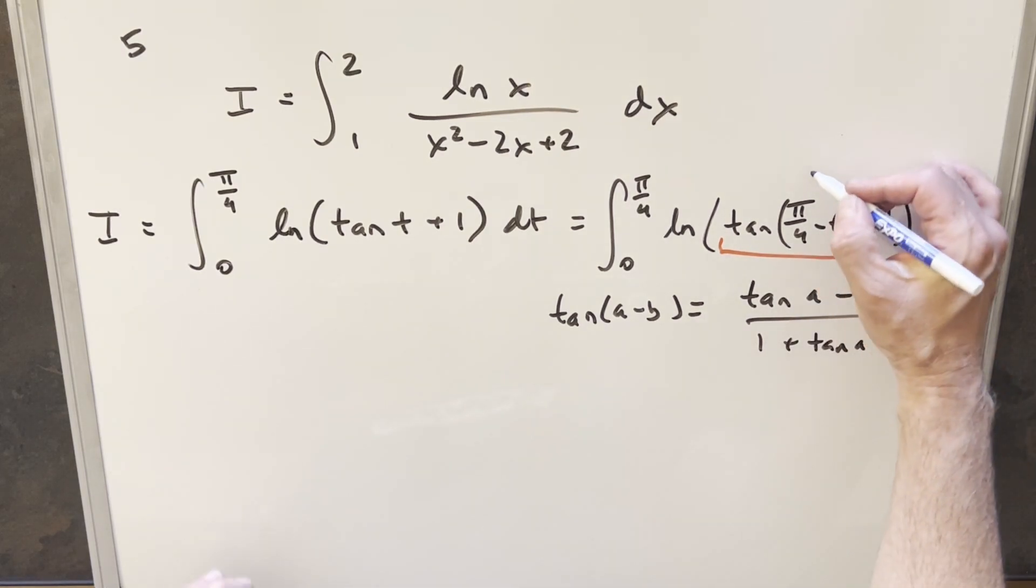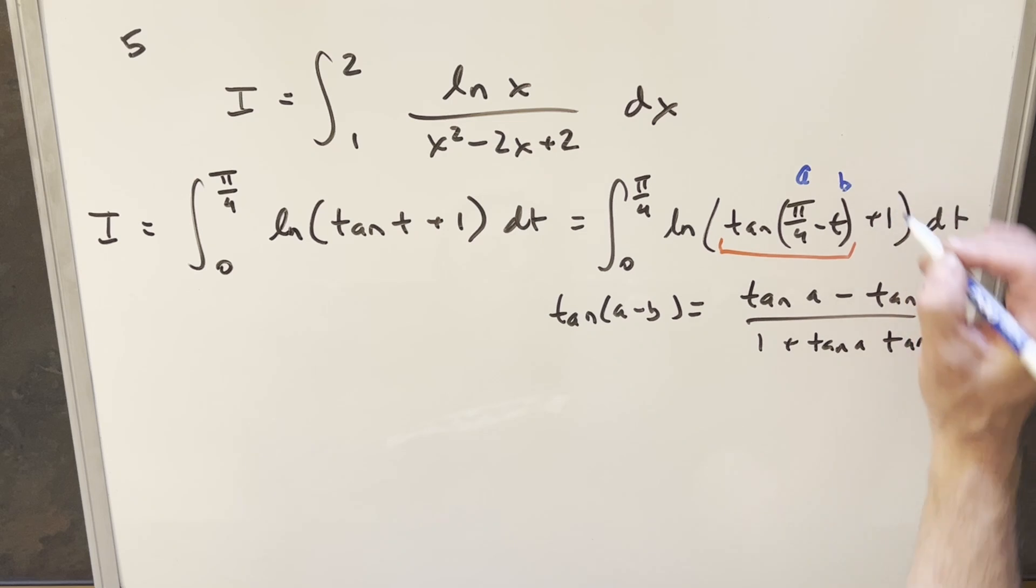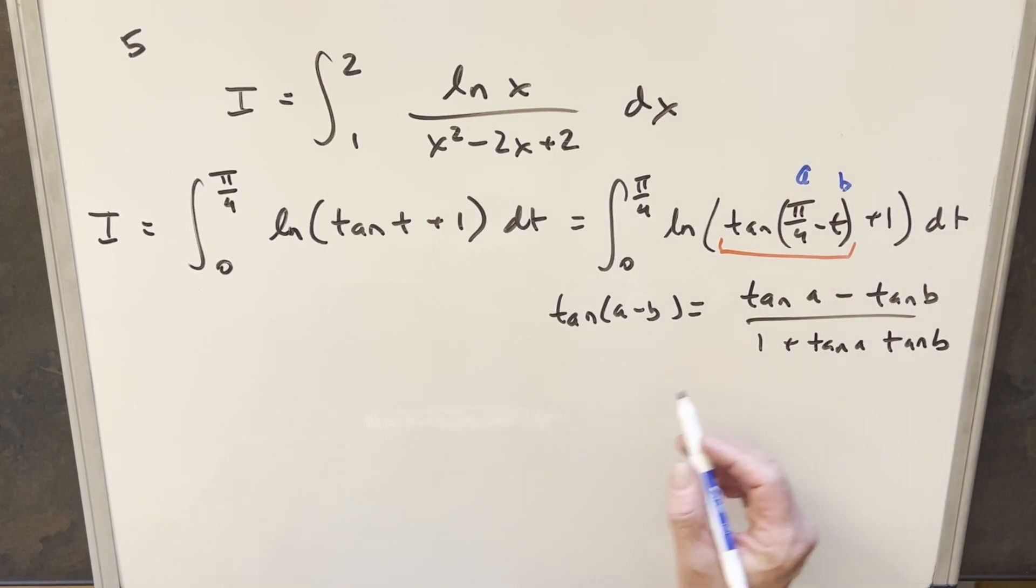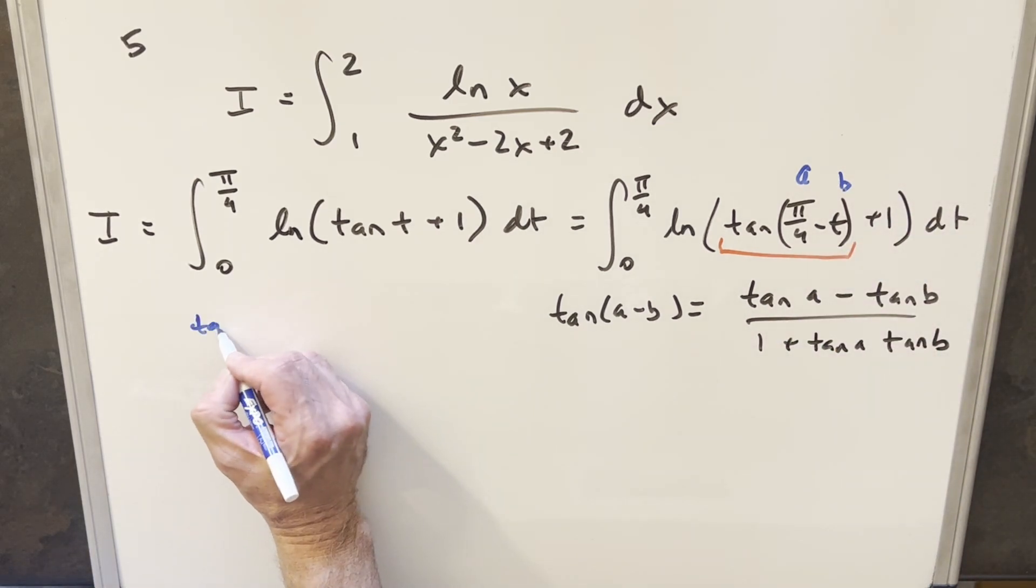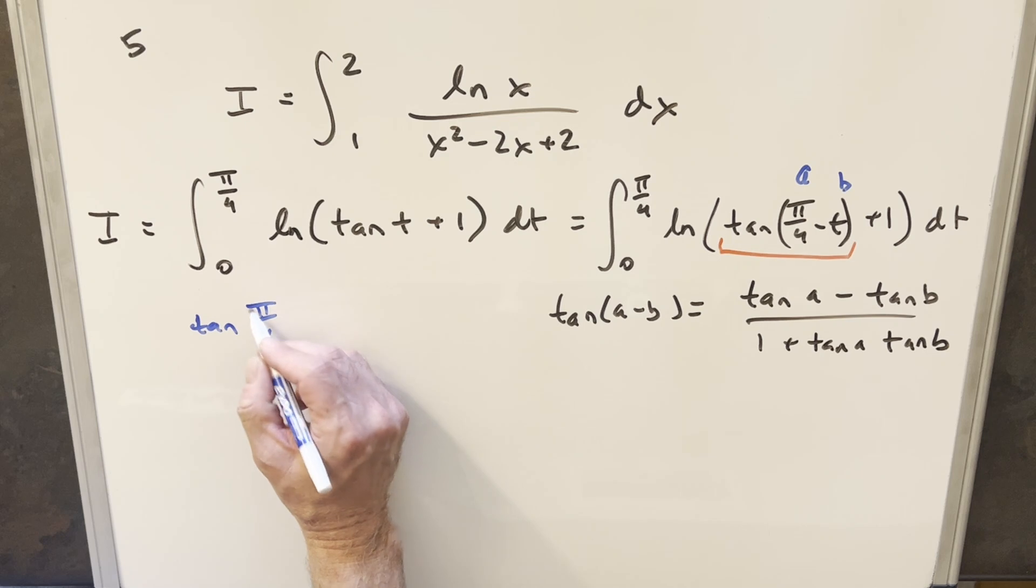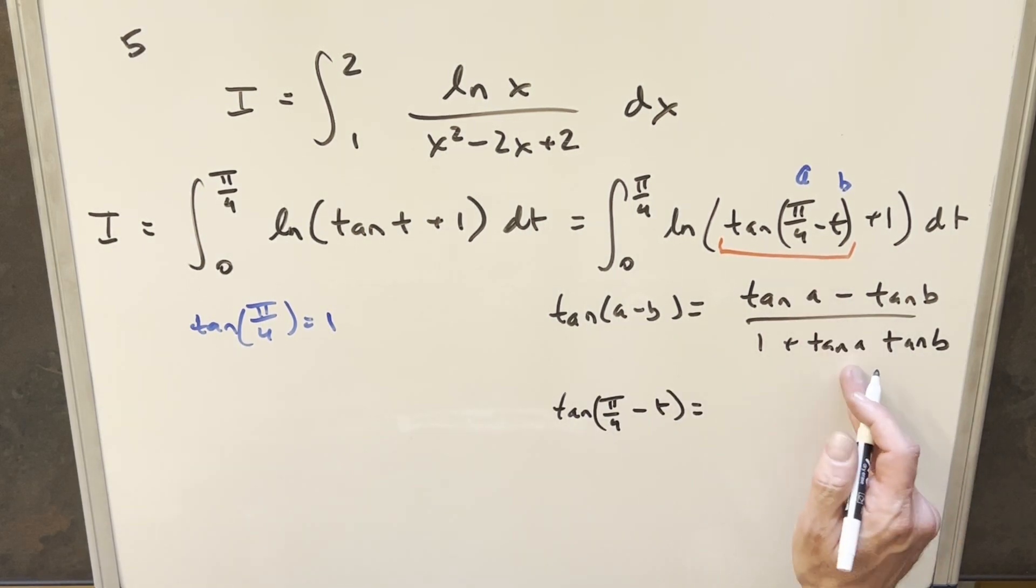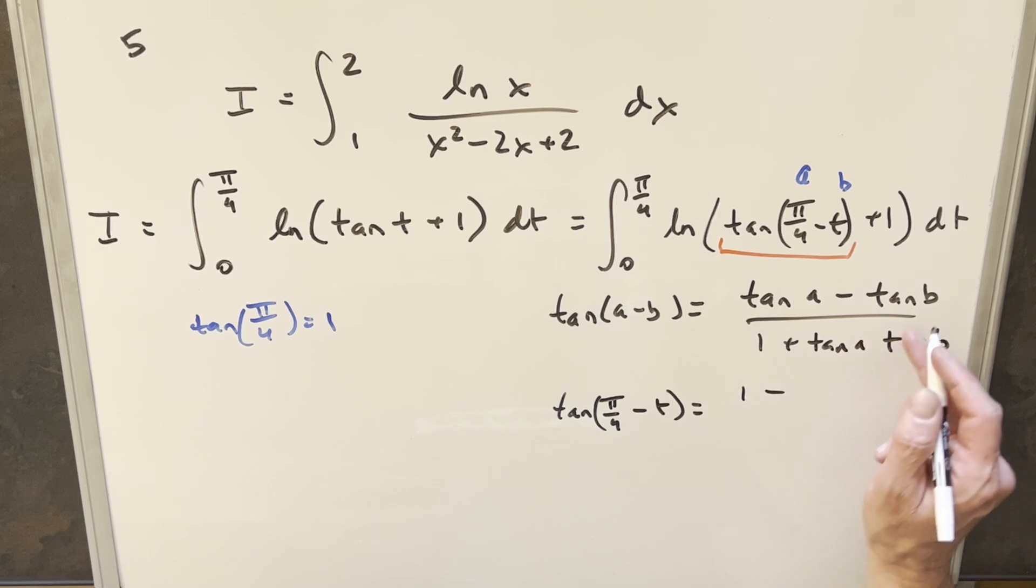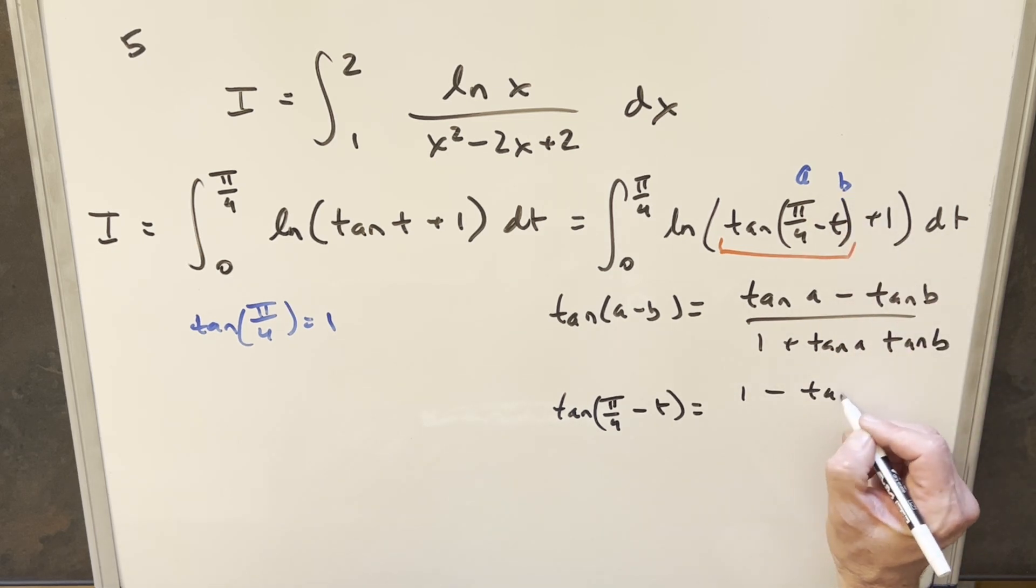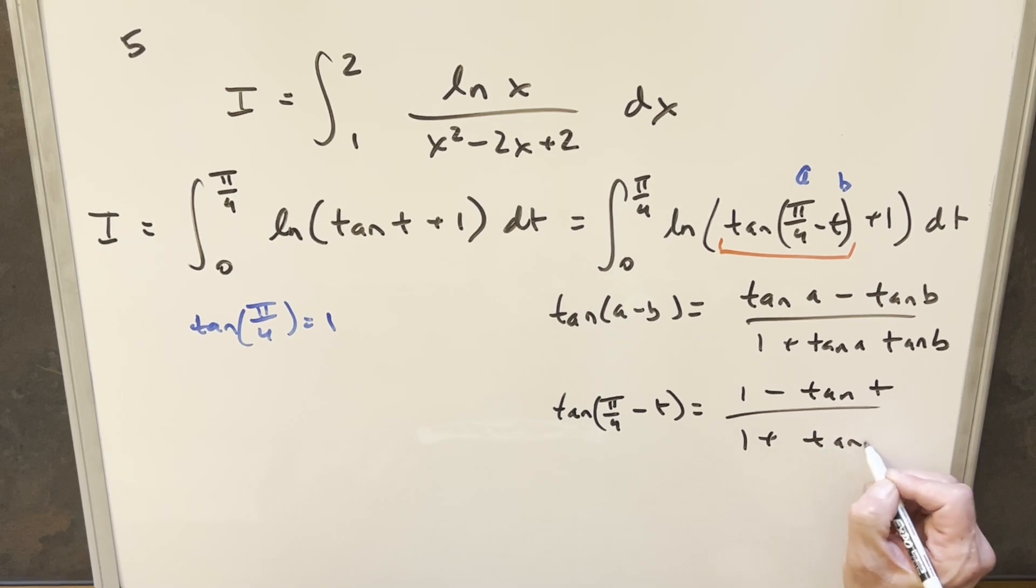So it's actually tan a minus tan b over 1 plus tan a times tan b. Now, when we use this here, our a value is just pi over 4, our b value is this t. And so then for the tan of a value, tan of pi over 4, that's just equal to 1. So that's going to help us clean this up. So when we use this formula to rewrite this, for tan pi over 4 minus t, then with all of our tan a's being 1, we end up with 1 minus tan of t. And the denominator is just going to become 1 plus tan of t.